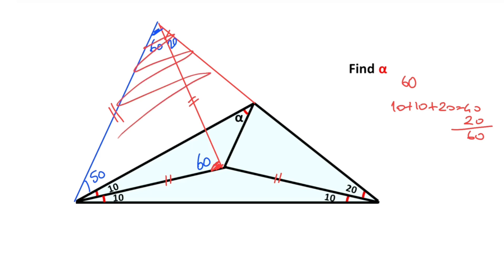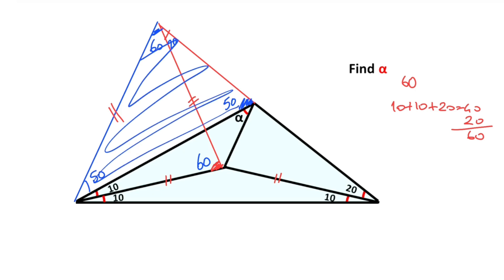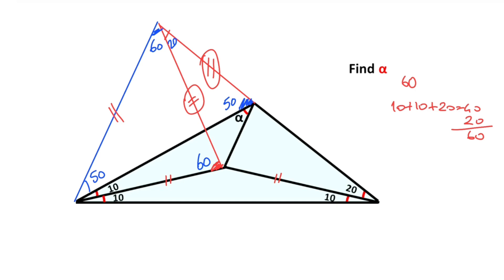Now if we focus on this triangle, we know that the sum of interior angles equals 180 degrees, so 50 degrees are left here. Notice that we get two equal angles, which means this triangle is also an isosceles triangle, so this side length must be equal to the others.